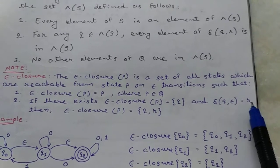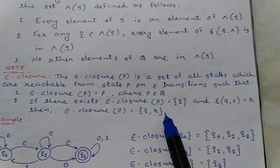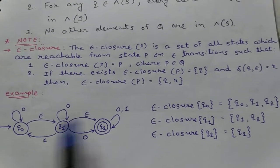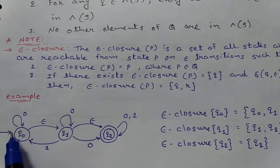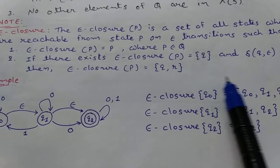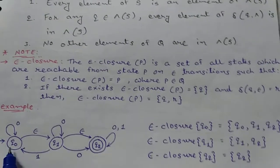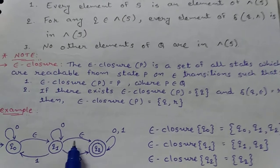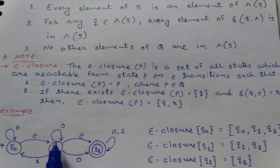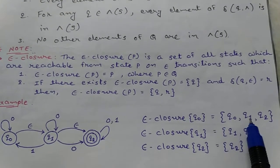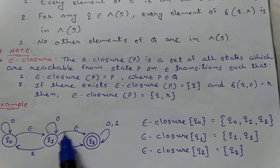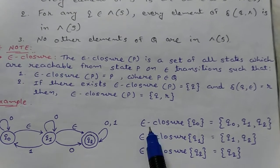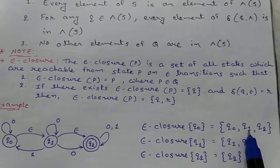For example, in this diagram I want to find the epsilon closure of q0. First, put q0 itself in the epsilon closure of q0. Then, being at q0 with the epsilon symbol, which state do you reach? From q0 using epsilon, you reach q1, so put q1 into epsilon closure of q0. Then using epsilon you reach q2, so put q2 into epsilon closure of q0. Therefore, epsilon closure of q0 equals {q0, q1, q2}.